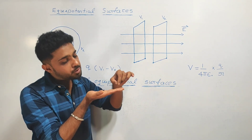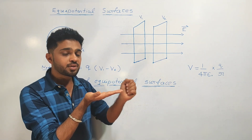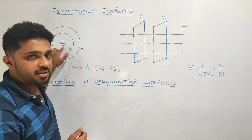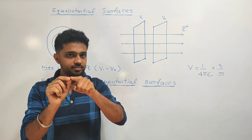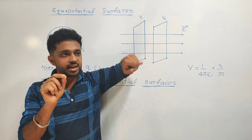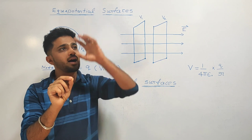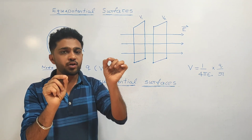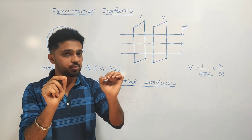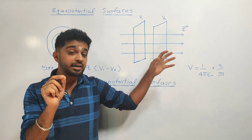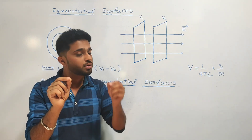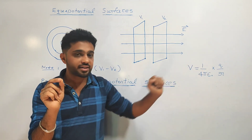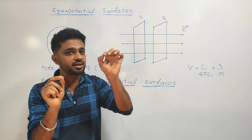You can calculate the electrostatic potential at any point — that value is constant. Using the formula 1 upon 4 pi epsilon naught, with a positive charge Q, and distance R, we can calculate the electrostatic potential.